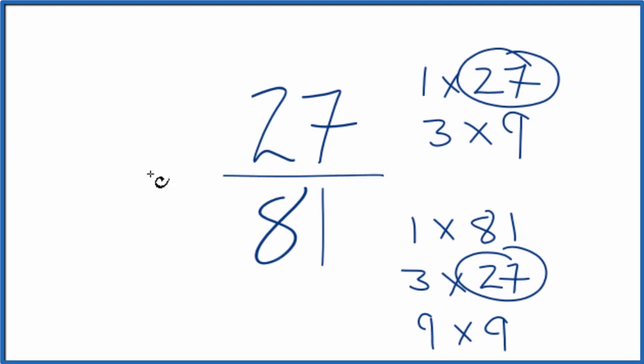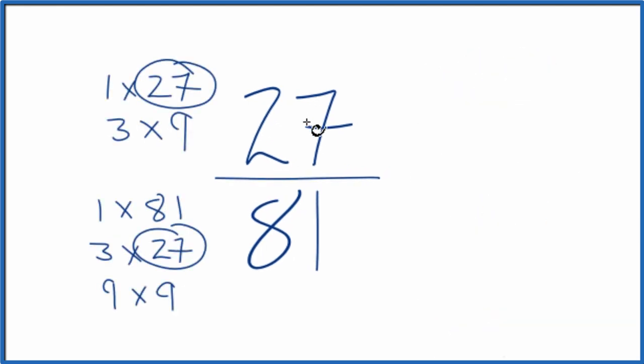Let's move these over here. So 27 divided by 27, that equals one. 81 divided by 27 gives us three.